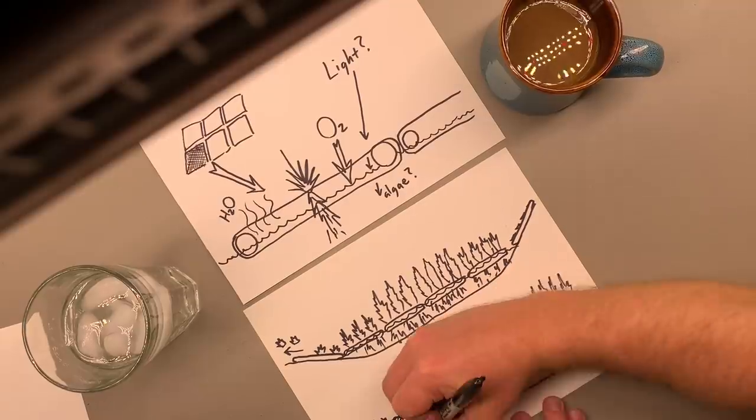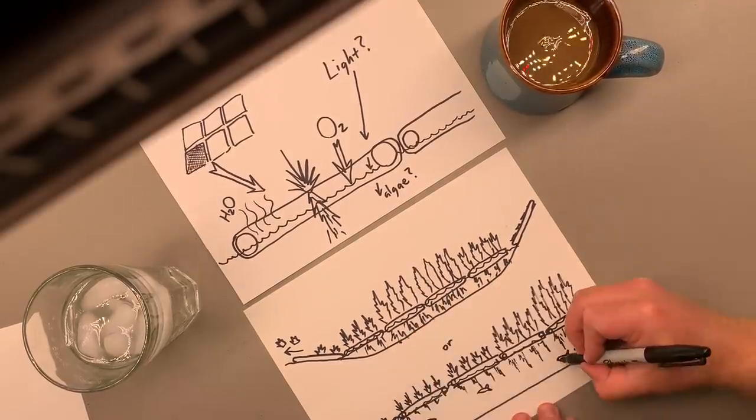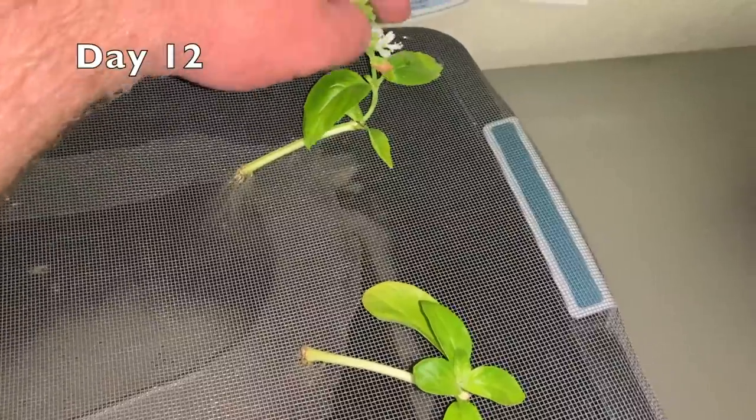In aquaculture, people cover the fish with a screen to keep the birds from eating them. So why can't we put plants on top too?